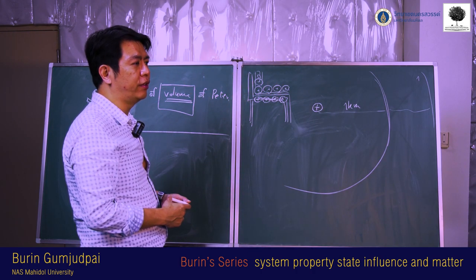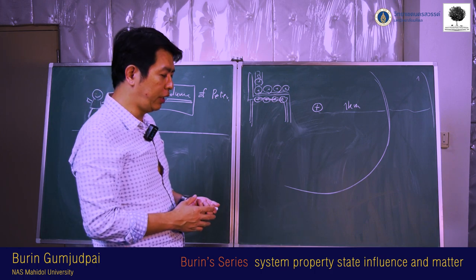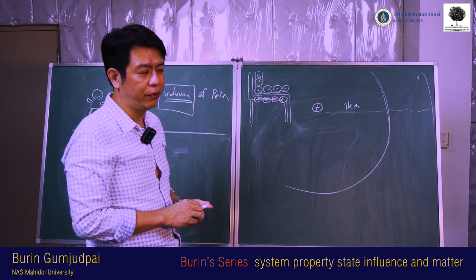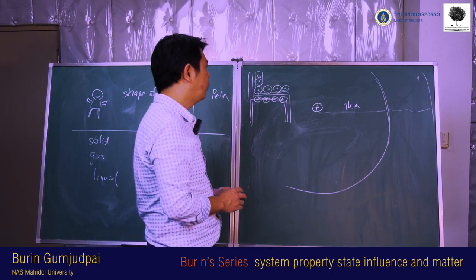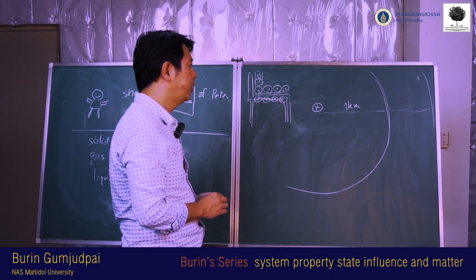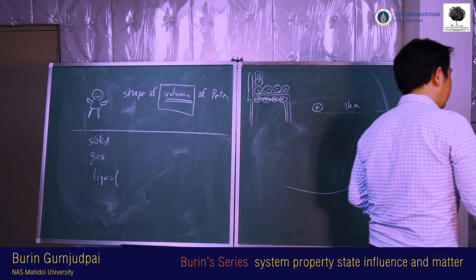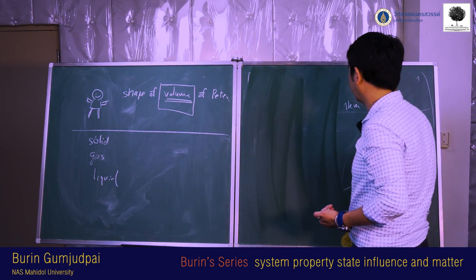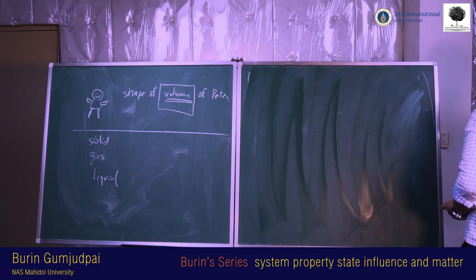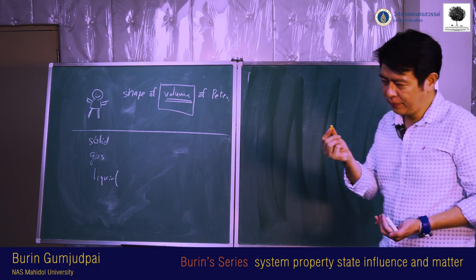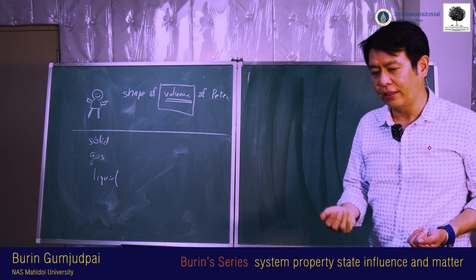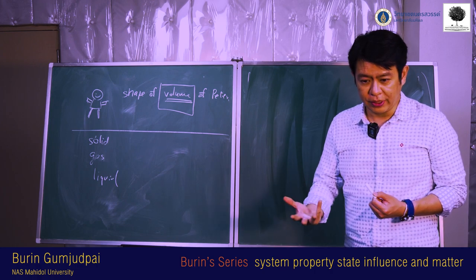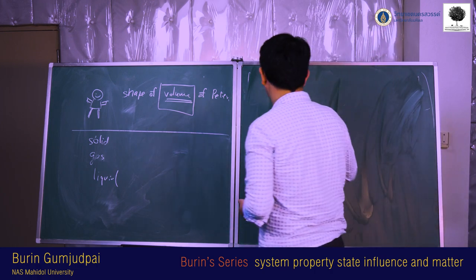So our bodies and everything around us in everyday life is just composed, comprised of emptiness mostly. So what is an electron then? When you try to describe an electron as a particle or as a wave, you should not consider it as a solid lump like a chunk. You should consider the electron as something with properties — something with properties.